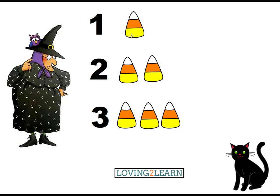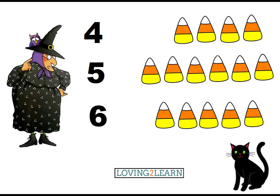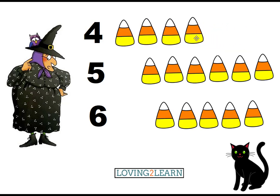Oh, you want to try some more numbers? Let's do it! Let's count the candy corns in the first row. Count with me: one, two, three, four — there's four. Where's the number four? Here's the number four. So actually that's in the right row, we just have to move that over.